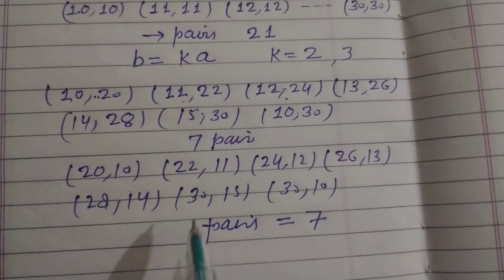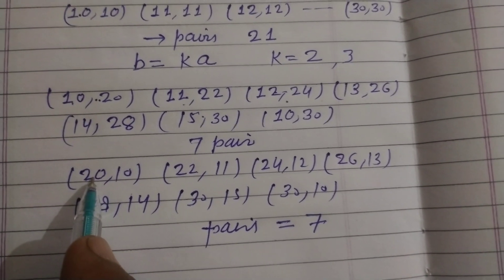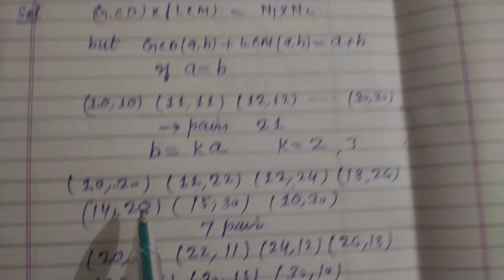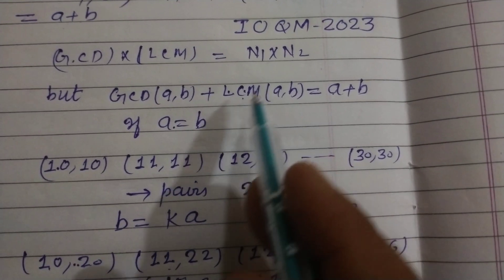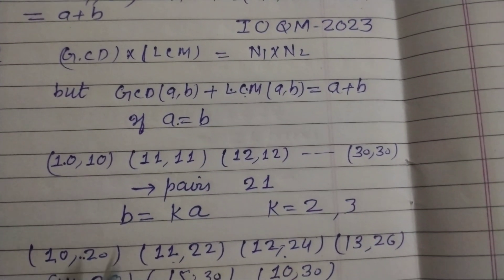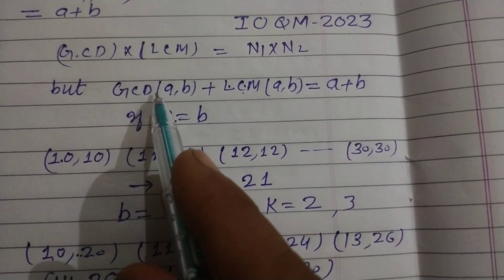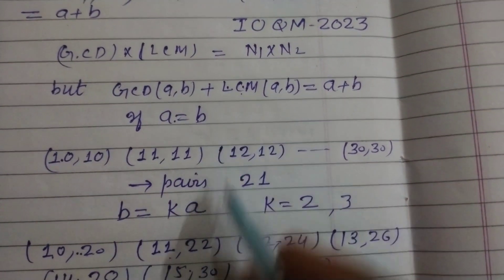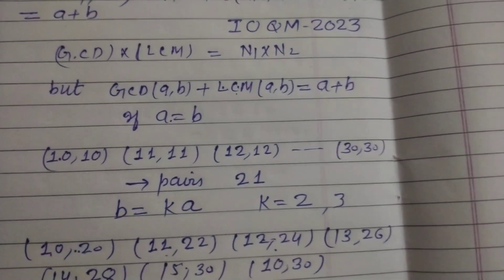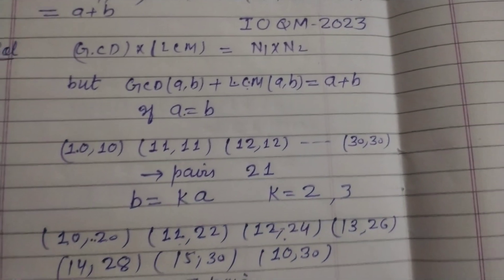Because we can get (20, 10): GCD is 10 and LCM is 20. So 10 + 20 is 30, and 10 + 20 equals 30.